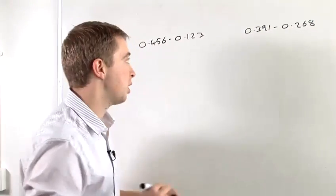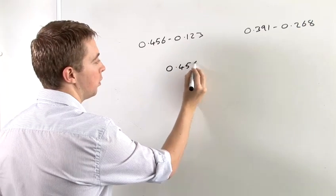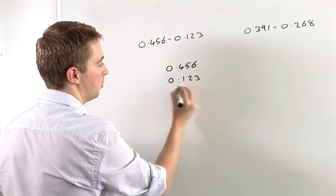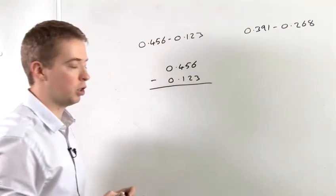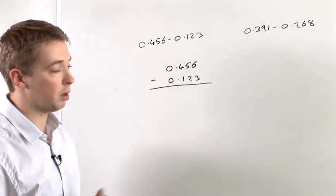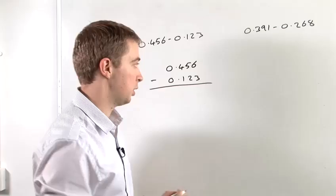As you would with any other number, you put the first number at the top, the second number at the bottom, and we're going to do a subtraction. It's important to note that the points are above each other. That's the most crucial thing when you're doing a sum like this.